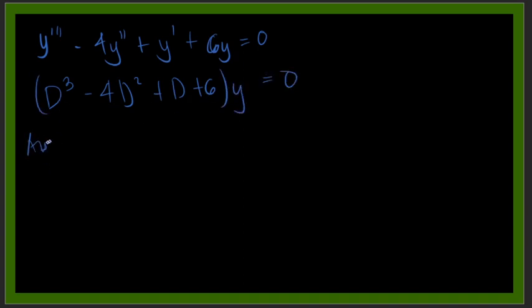Now, getting the auxiliary equation. So m is equal to dy. So we have m cube minus 4m squared plus m plus 6 is equal to 0. You can use your calculator in getting the roots of this one. For example, we have our calculator.